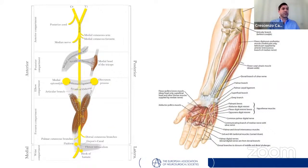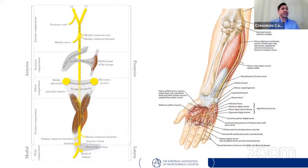After the cubital tunnel, the ulnar nerve travels alongside the ulna, staying deep to the flexor carpi ulnaris and superficial to the flexor digitorum profundus. In the distal forearm it moves lateral to the flexor carpi ulnaris, then medially toward Guyon's canal, entering the palm superficial to the flexor retinaculum. Once in the hand, the nerve ends with its terminal motor branches.